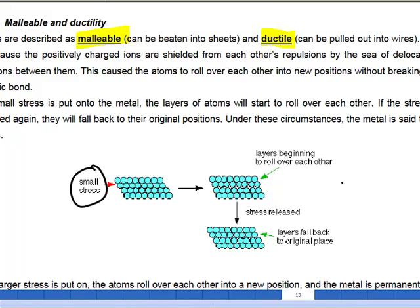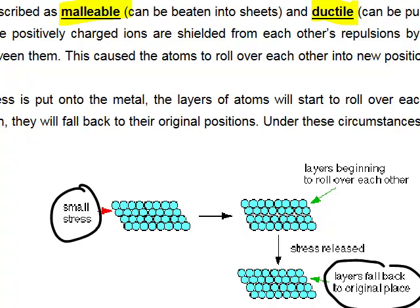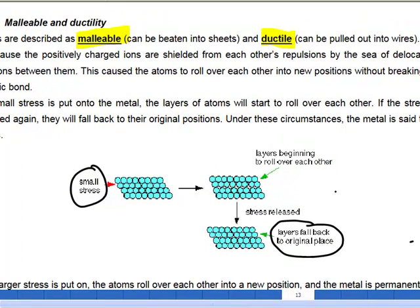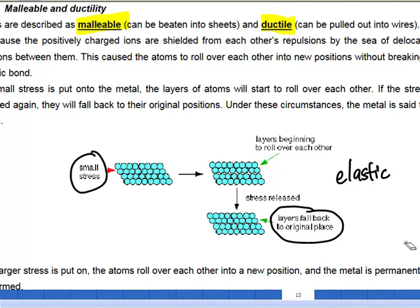So if I apply a very small stress, the layer is able to fall back to its original position and I call this elastic. You can see that some of the metals, you can bend them and they will go back to the shape easily if you don't bend it too hard.